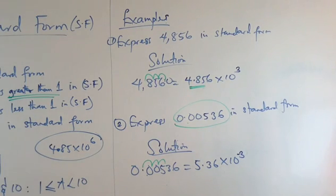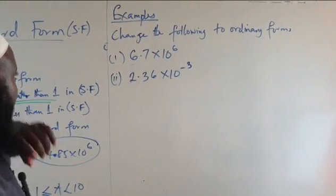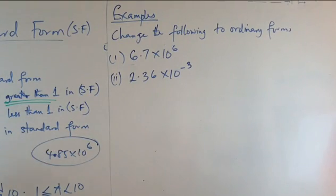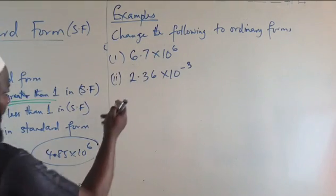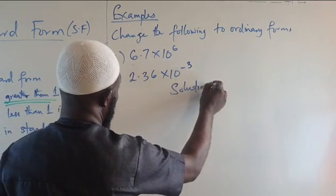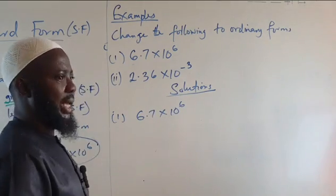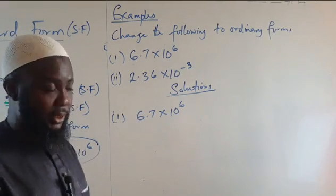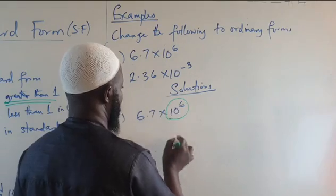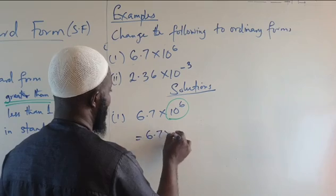Now let's move to changing numbers in standard form to ordinary form. Let's look at some examples. The first one: we have 6.7 multiplied by 10 raised to the power of 6. The rule here involves multiplication by powers of 10. 10 raised to the power 6 means 1 followed by 6 zeros.